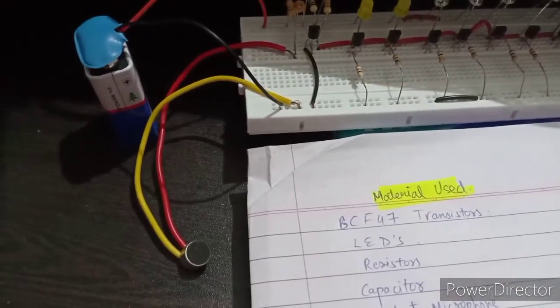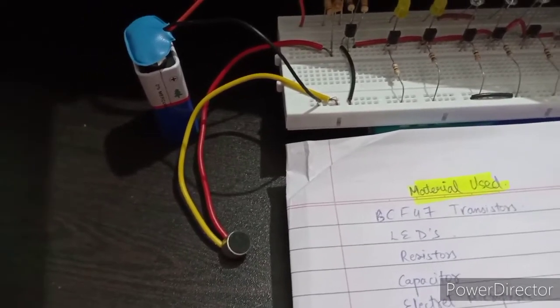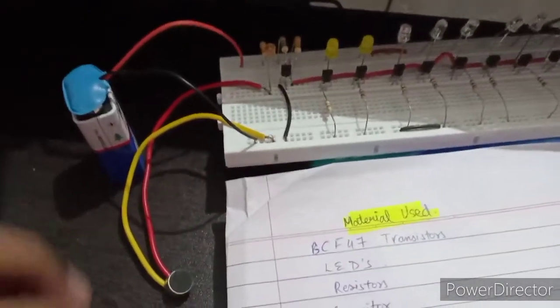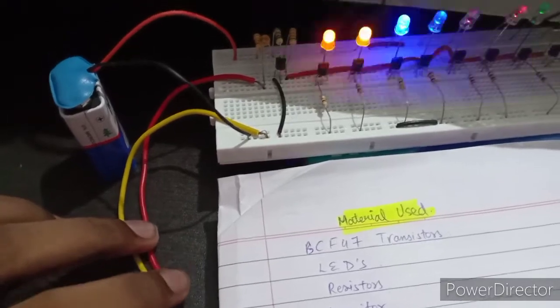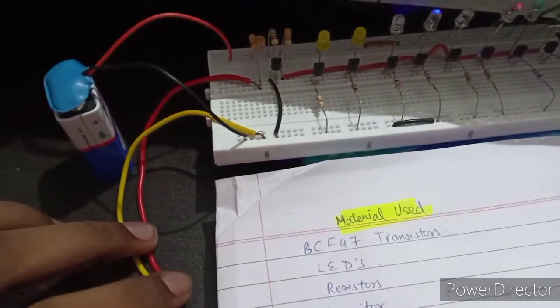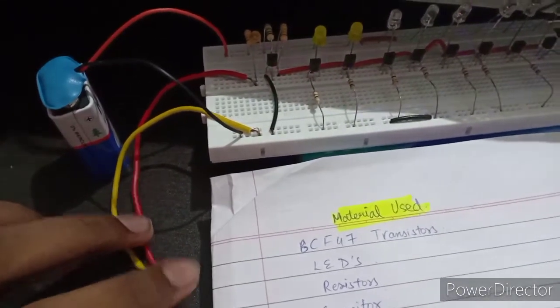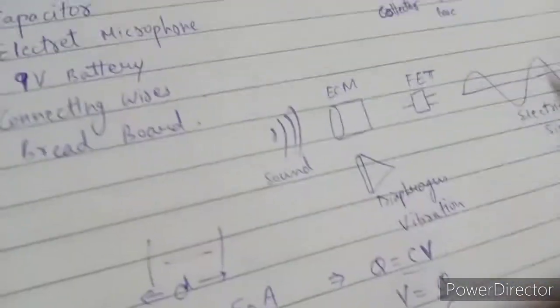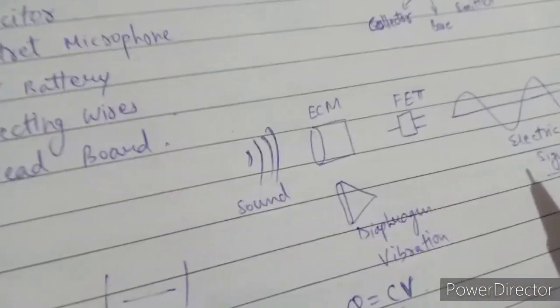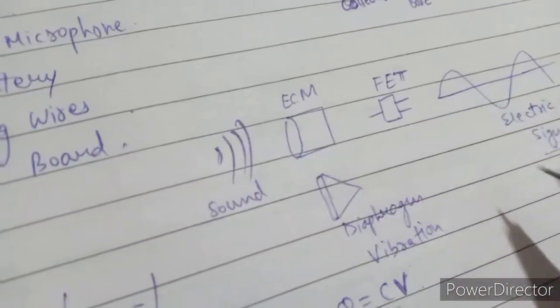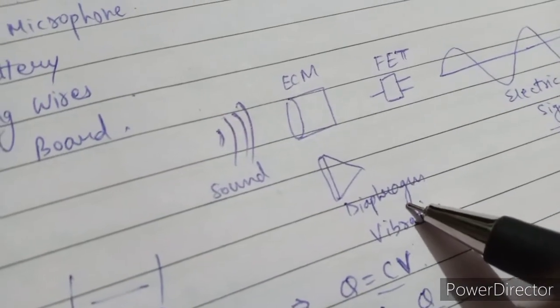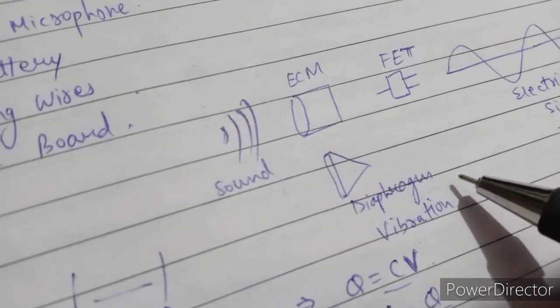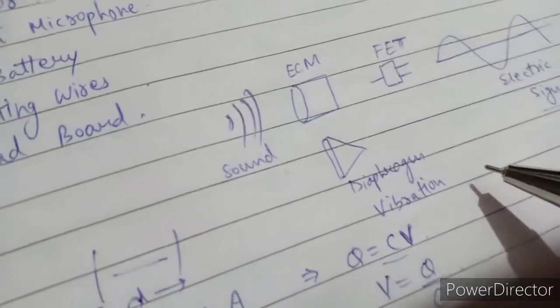Let us now watch the working principle of the electric microphone. When we produce vibration near this electric microphone, these vibrations travel through it. There is a film inside which acts as a plate for the capacitor.